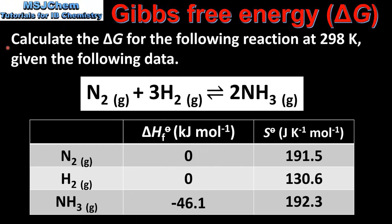Next we look at an example. Calculate the change in Gibbs free energy for the following reaction at 298 K, given the following data. The reaction in question is the Haber process, in which nitrogen and hydrogen react together to form ammonia. In this table we have the standard entropy change of formation values and the absolute entropy values of the reactants and products. Note that for nitrogen and hydrogen the standard entropy change of formation values are zero.